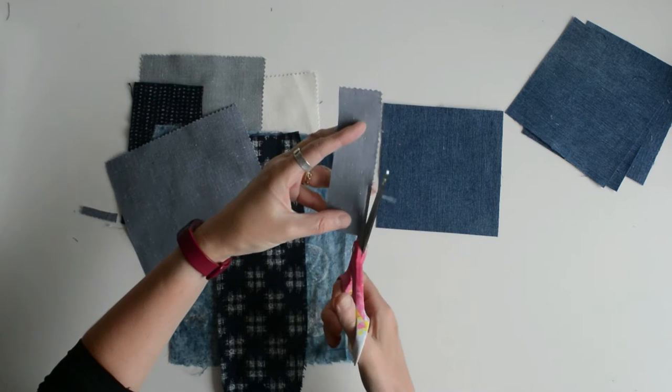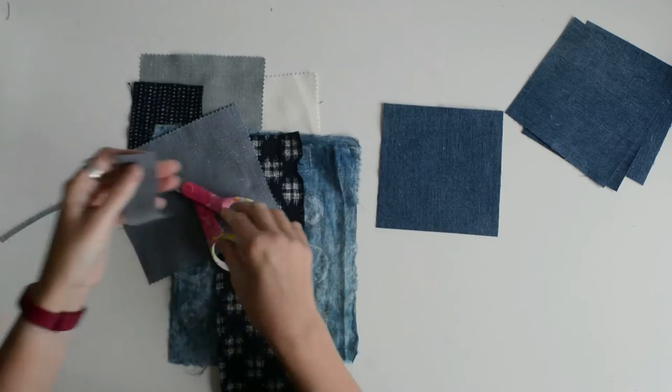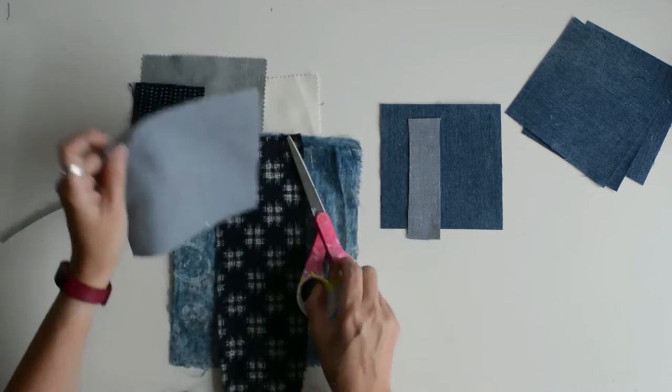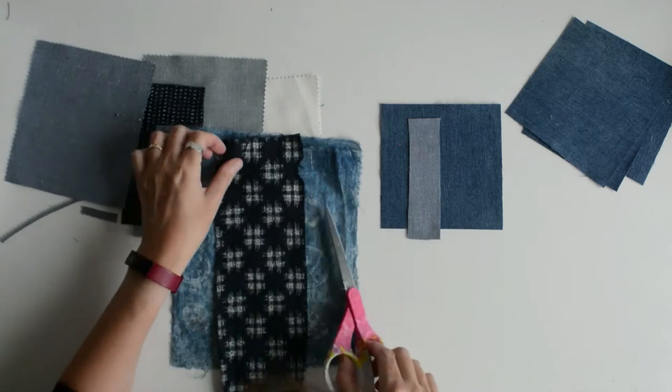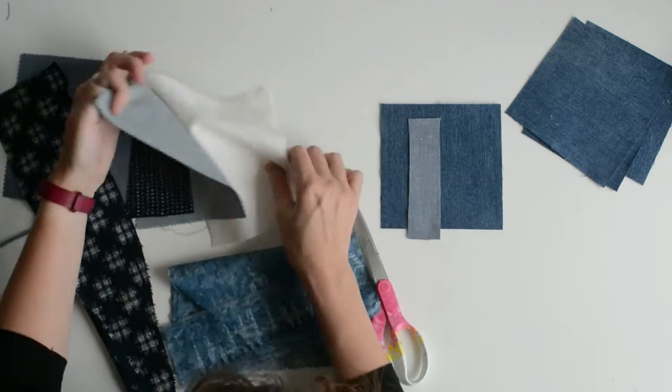So this is my linen samples. I'm just cutting off the zigzag edge because I don't want that look. So I'm just going to play with different fabrics and they're three pieces per coaster.